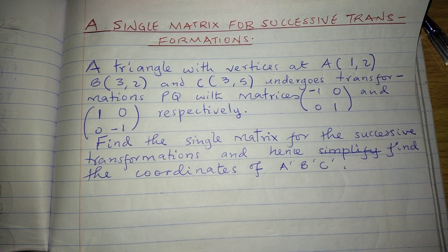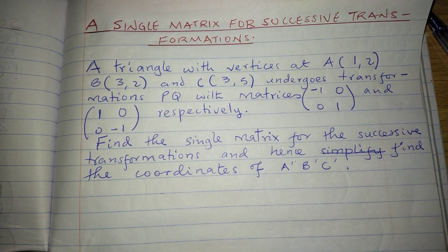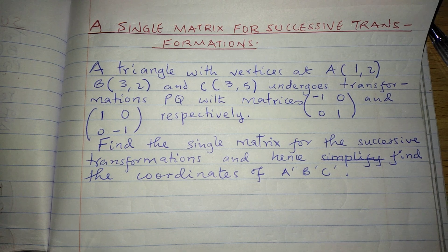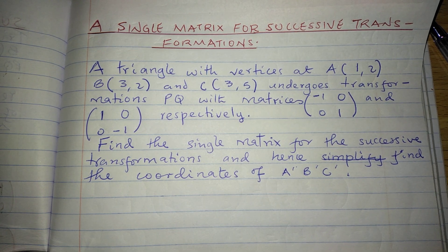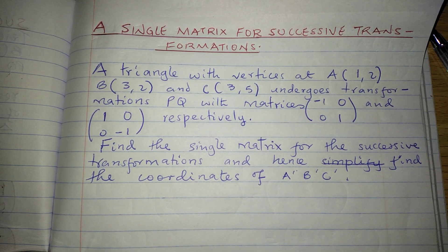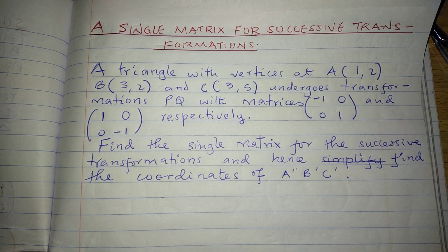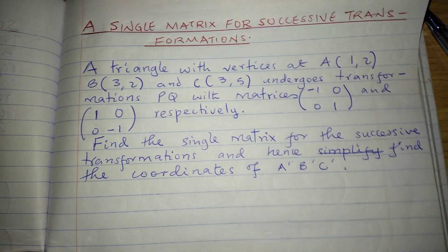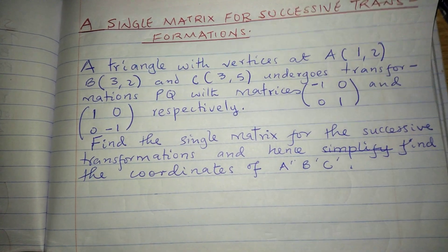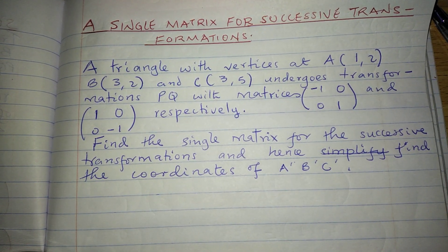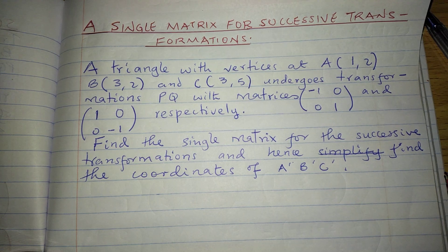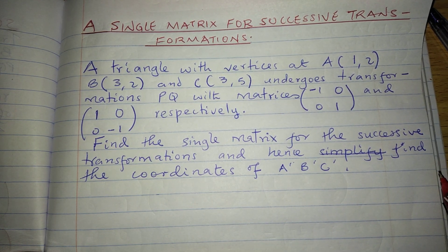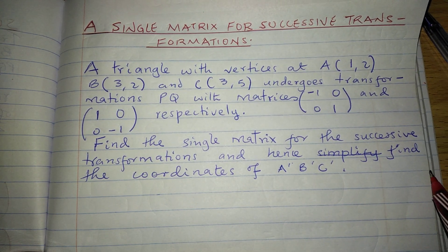Thank you for joining this lesson. We are going to study how to get a single matrix for successive transformations. Yesterday we learned that when an object undergoes successive transformations written in a certain order, they are performed starting with the one on the right hand side followed by the one on the left hand side.